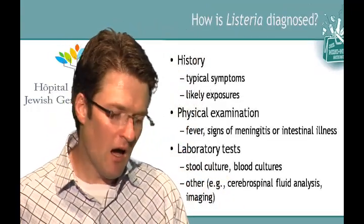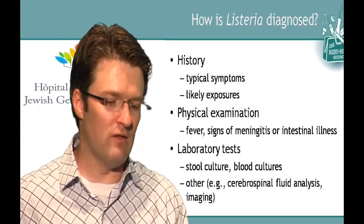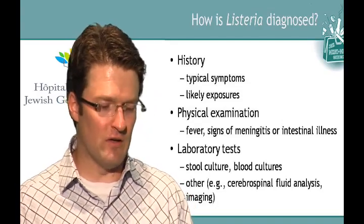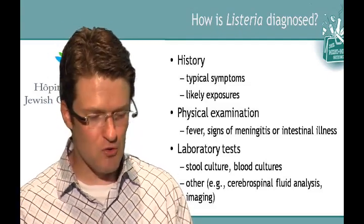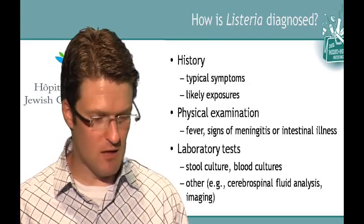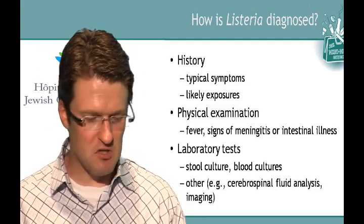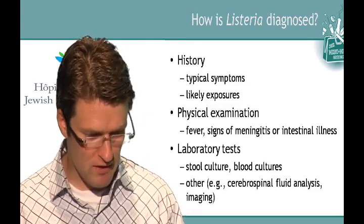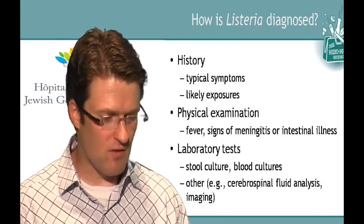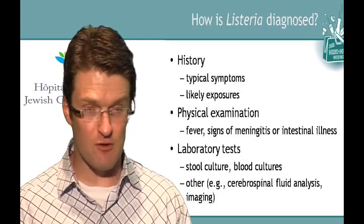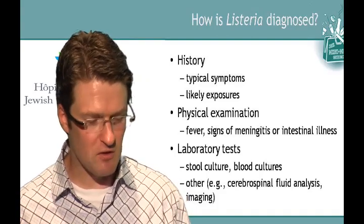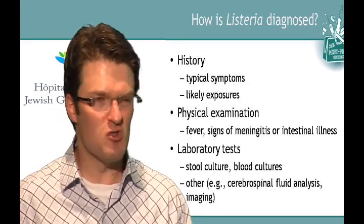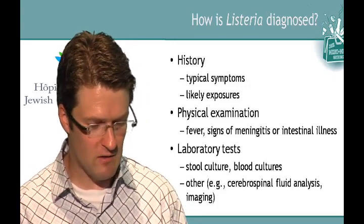How do you diagnose Listeria? Typical symptoms include fever with intestinal infection, abdominal pain, and diarrhea. I'd want to know what exposures could have put a patient at risk. Physical exam includes looking for fever, signs of meningitis, intestinal illness, and if a woman of childbearing age, whether she is pregnant and whether the fetus seems healthy. This can be a difficult infection to diagnose in the laboratory. You can sometimes do it from stool culture, though it can take so many days that the information is too late to be useful. You can sometimes detect it in blood cultures, and if meningitis is suspected, you can do a spinal tap to analyze the cerebrospinal fluid.